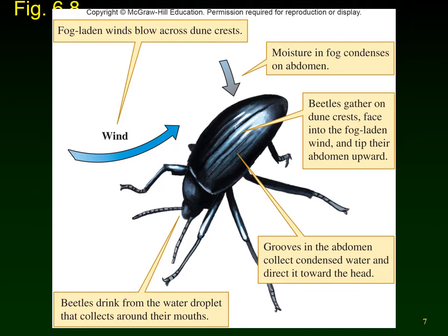These are some beetles in the Namib Desert. They don't have any place to drink — no open water sources, no rain. But winds blow in off the water carrying moisture. Early in the morning when the air is cool, the molecules are closer together, the air becomes saturated, and it produces fog. When the fog is blown over the crest of the dunes, these beetles line up along the top and stick their butts up in the air.